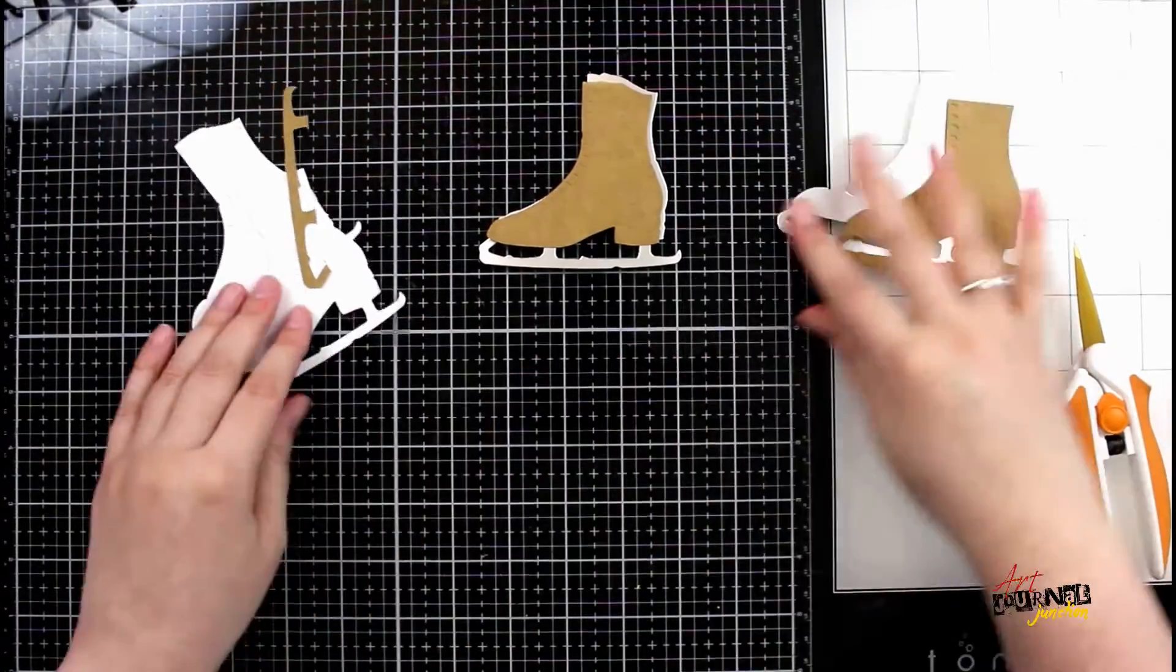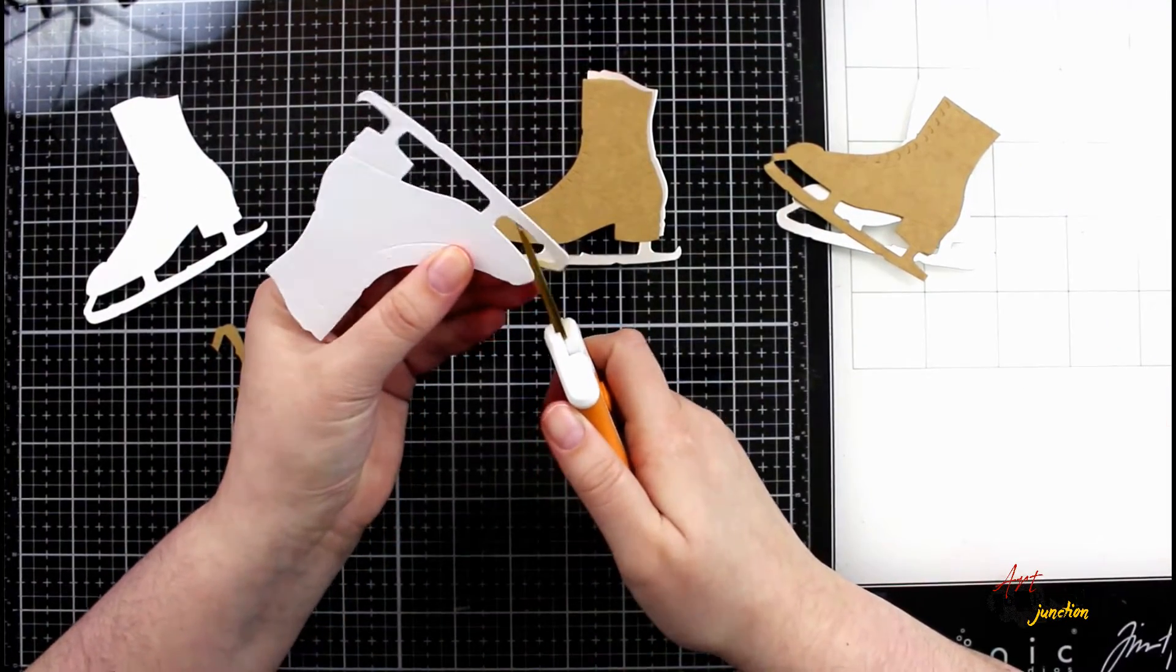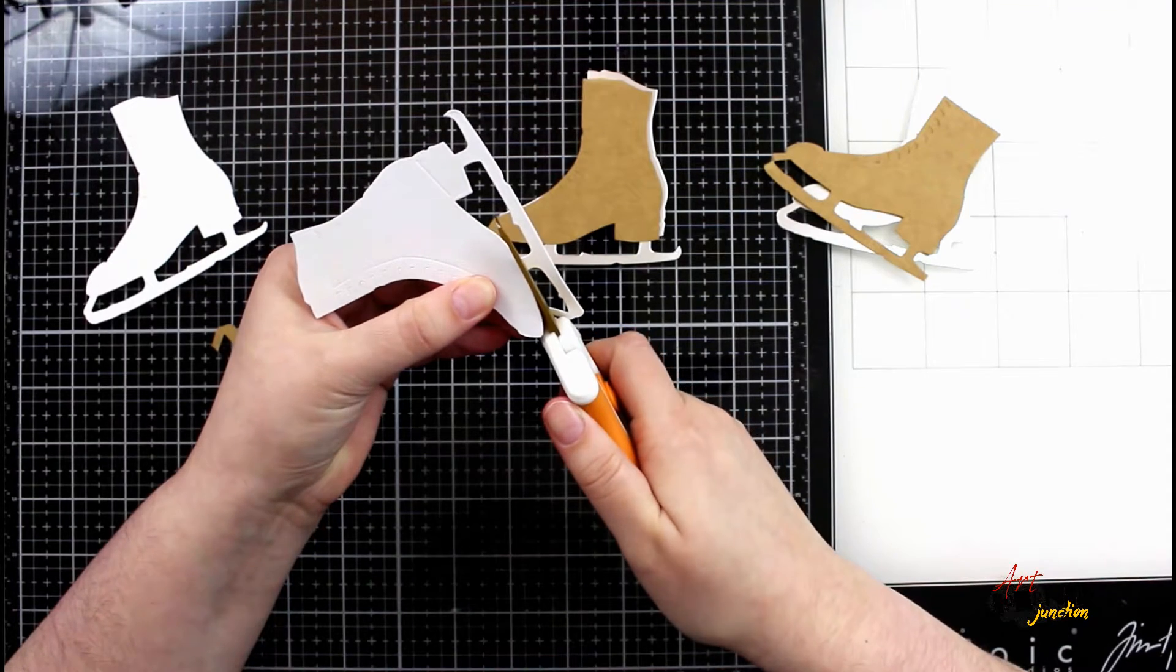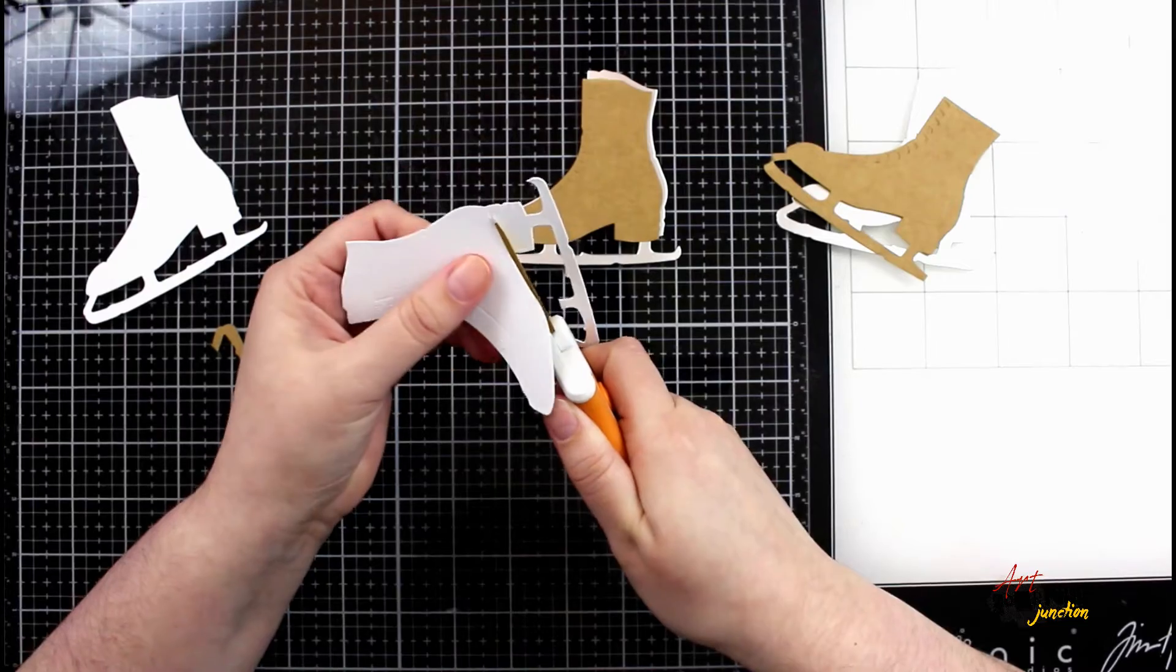This is currently a discontinued die, but you could easily do this same concept with a stamp or a stencil or even cut out from a magazine. There's lots of them right now available with the Olympics being currently on TV.